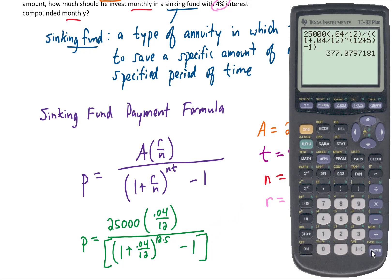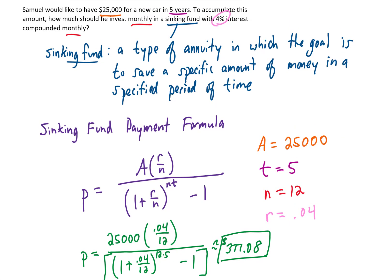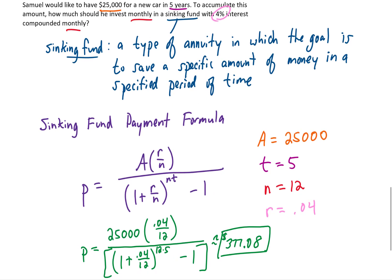Okay, let's see what answer we get. We get $377.08. So if we invest $377.08 every single month for five years with a 4% interest rate, we should end up with $25,000 in that account.